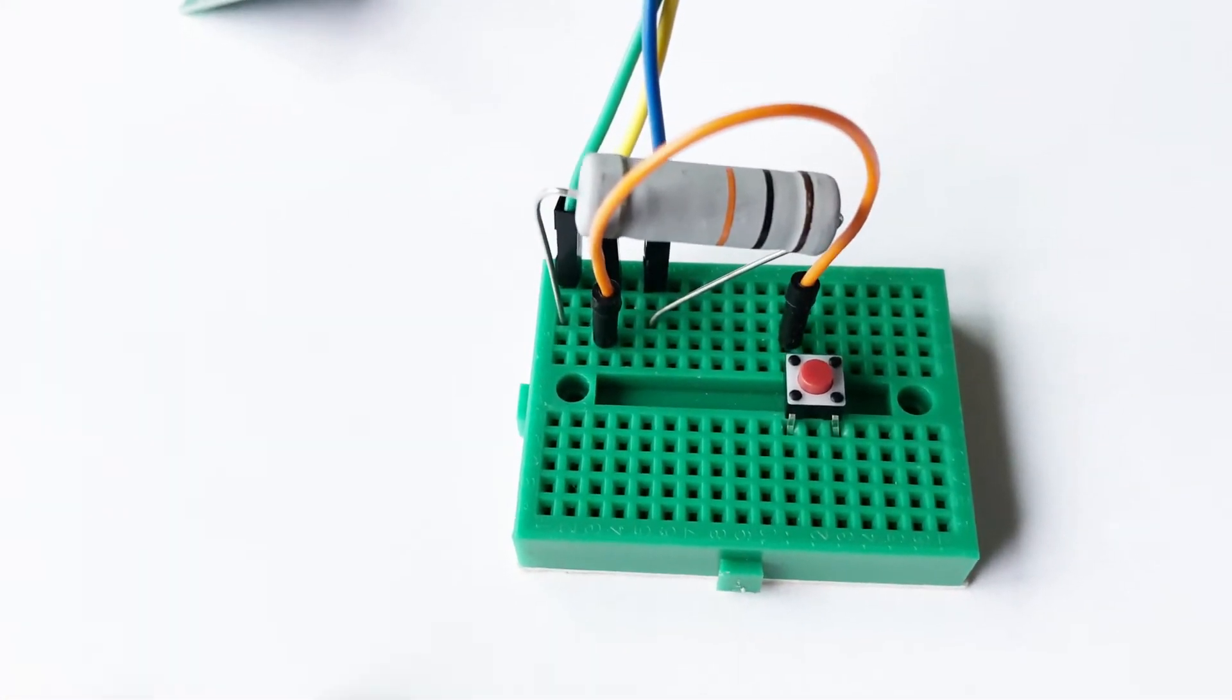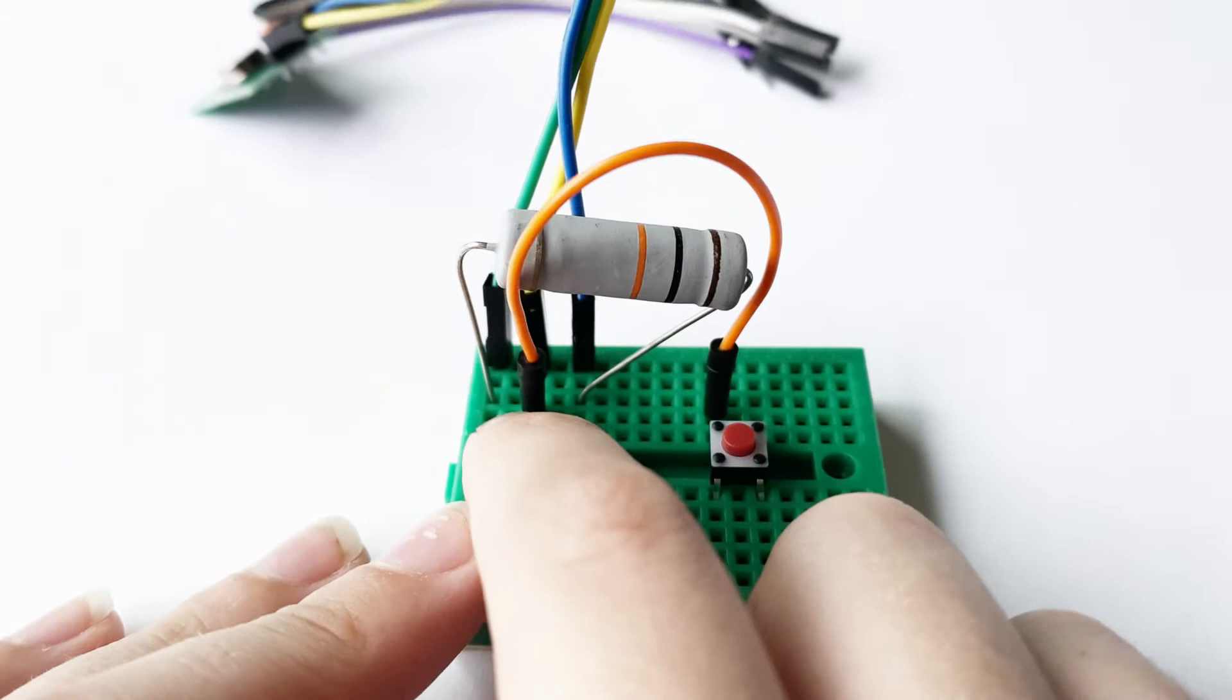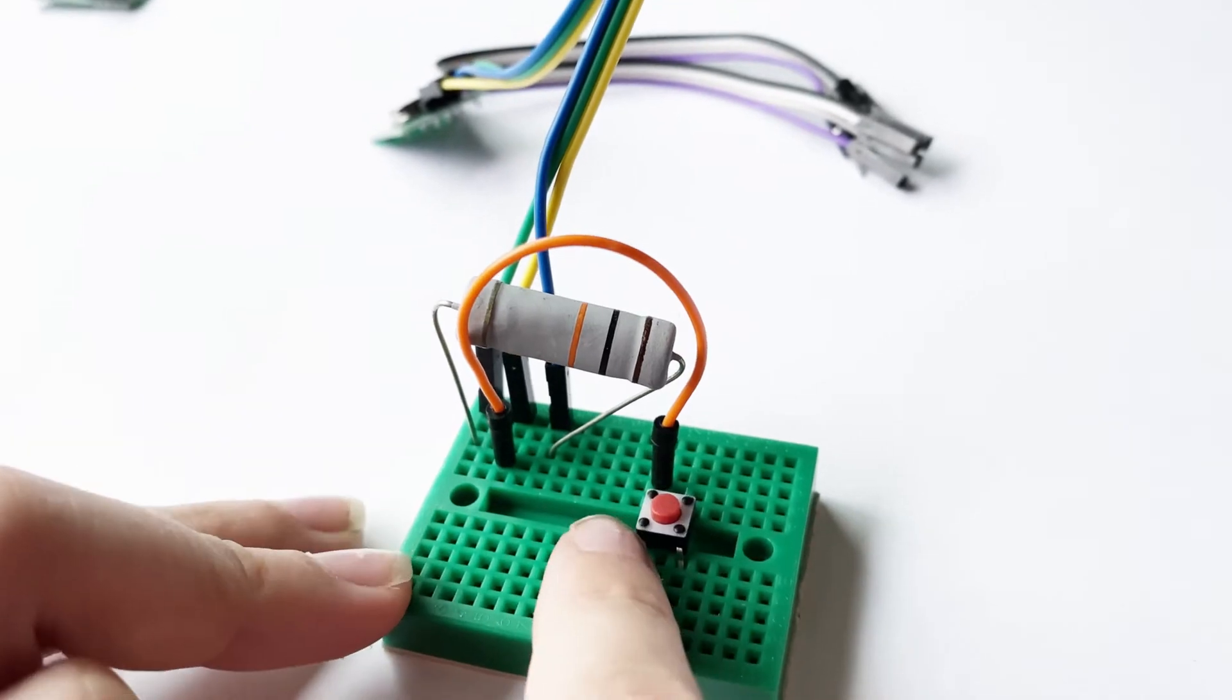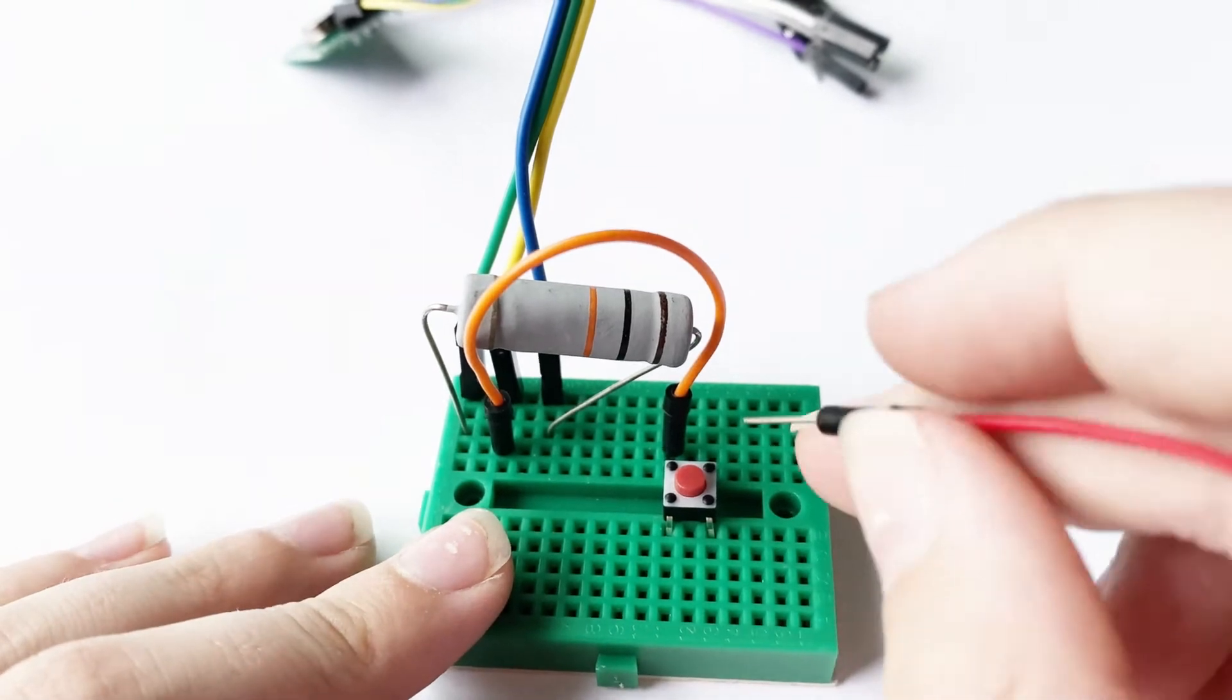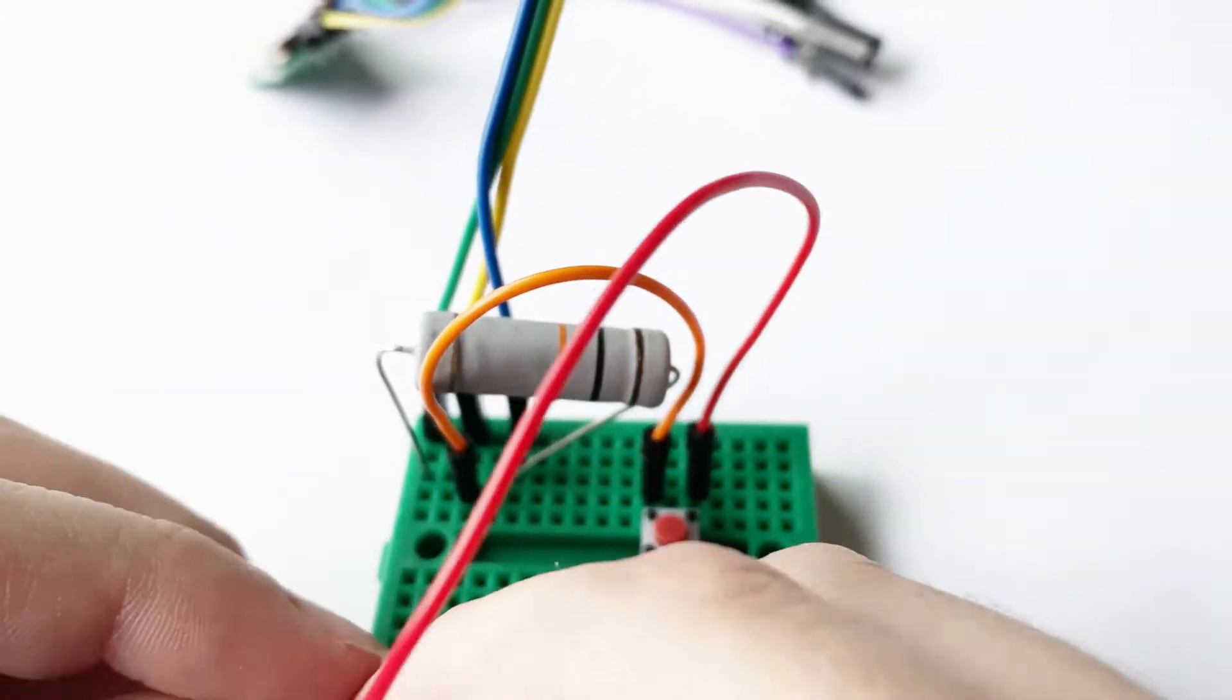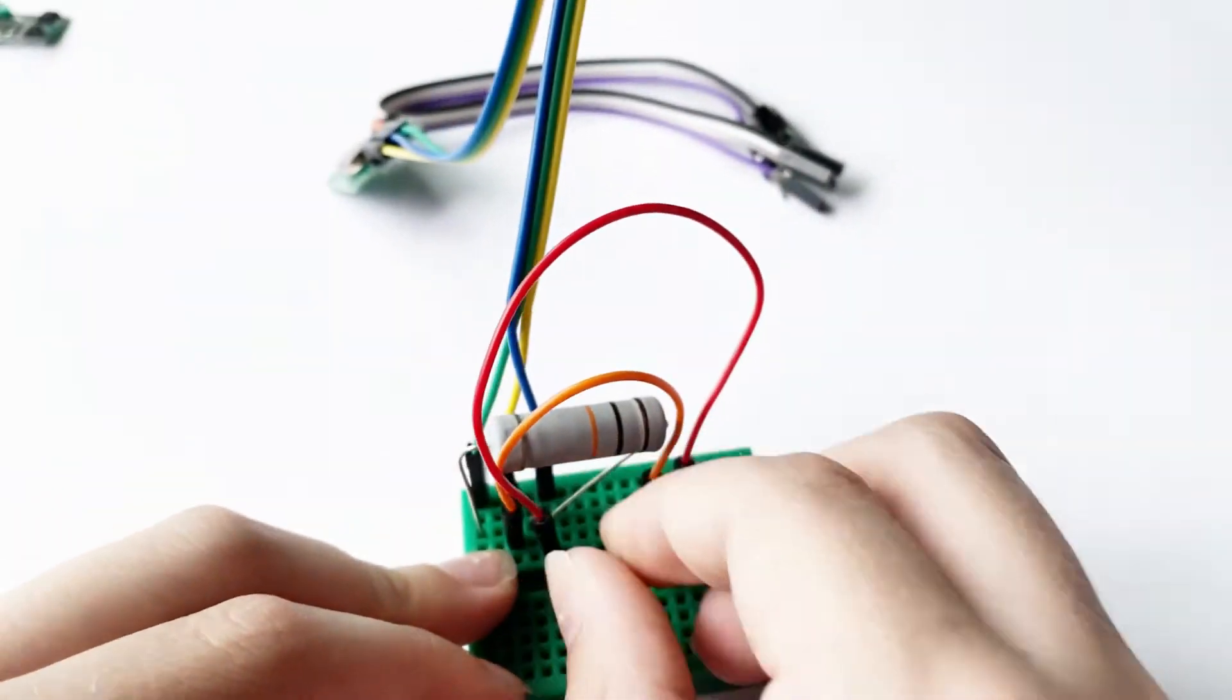So now if you look, one end of the orange jumper wire is in the same row of holes as the yellow wire, and the other end is in the same row of holes as one of the button pins. Now we can get another jumper wire and put it into the same row of holes as one of the other pins and put the other end in the same row of holes as the blue wire.